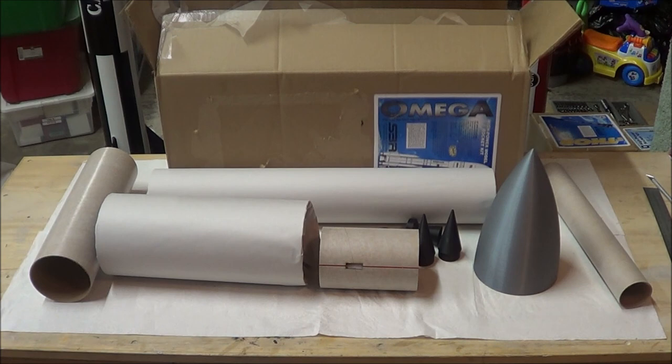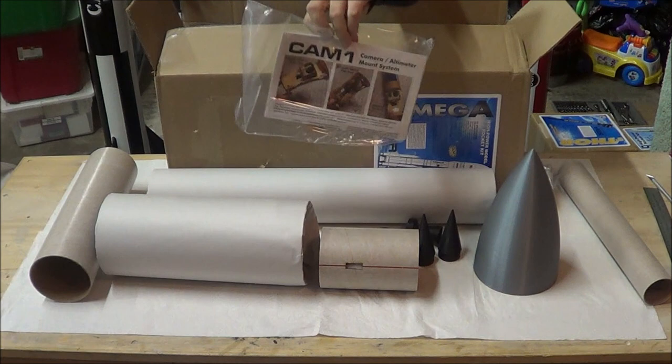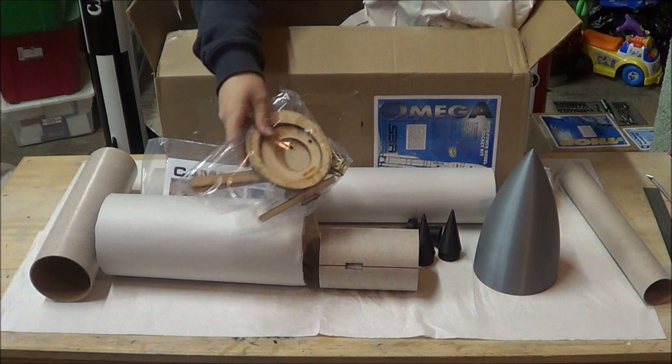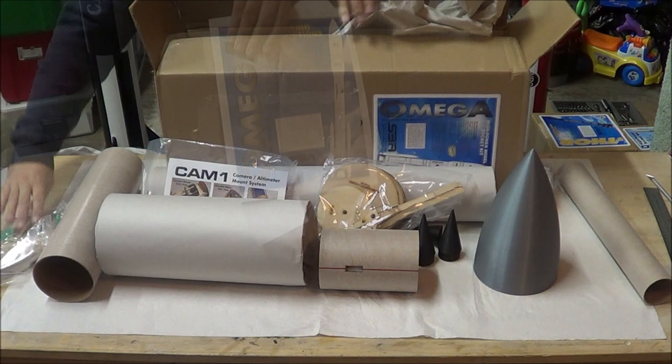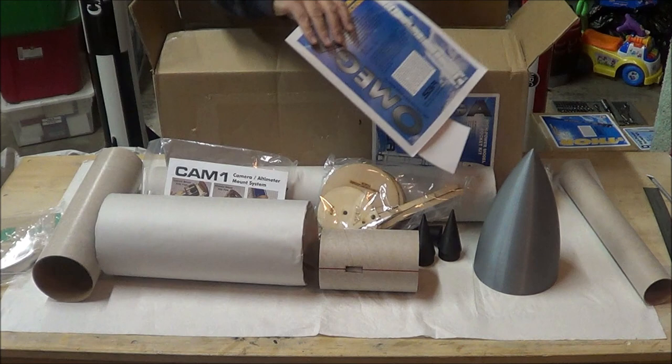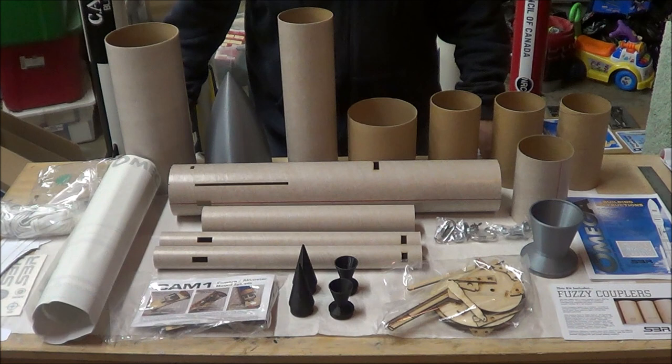Looks like the kit comes with a recovery harness. Here's the pre-made Cam 1 camera mount and altimeter sled. There's some more laser-cut plywood parts. Here are the clear lexan fins. They've got what looks like a paper protectant on them. And finally the instruction manual. I'm going to clean up the table here and we'll have a better look at all the parts.